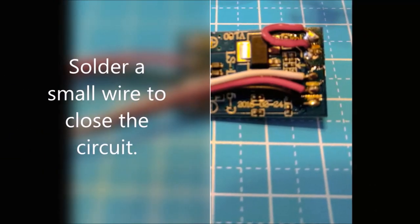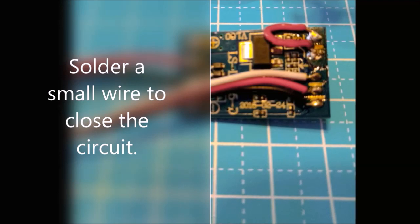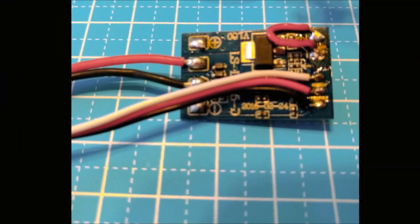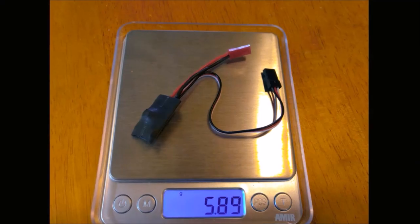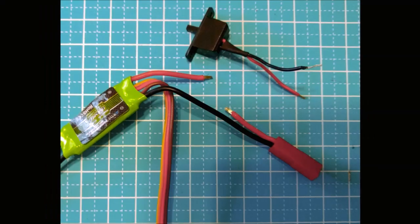We're going to have to solder a small wire to close the circuit. And then we're going to heat shrink the entire unit so that we can protect all of the wiring.